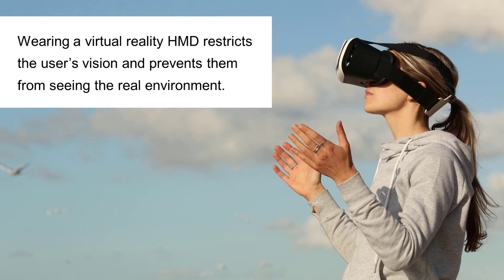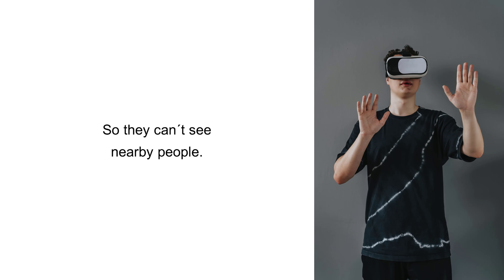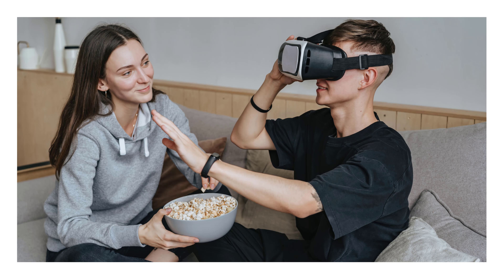Probably most of you already had the experience that when you put on a virtual reality HMD, such as an HTC Vive or an Oculus Rift, you were no longer able to visually perceive the real environment, and therefore it was not possible to see the people around you anymore. That means VR users don't know if they are standing in front of a person or where a person is at the moment.